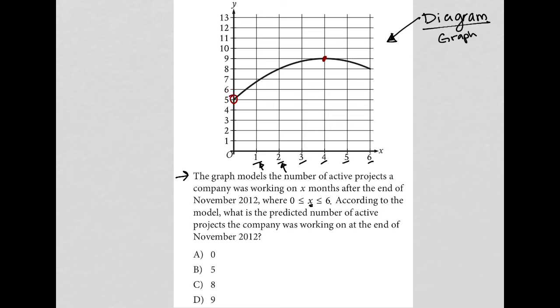Oh well, at the end of November 2012, is that time 0? And we've already noted that, which is so interesting. I usually look for intercepts, and they end up, a lot of times, being very important. So that intercept is at 5. So that means the number of projects at the end of November 2012 was 5, and therefore the answer to our question here is choice B.